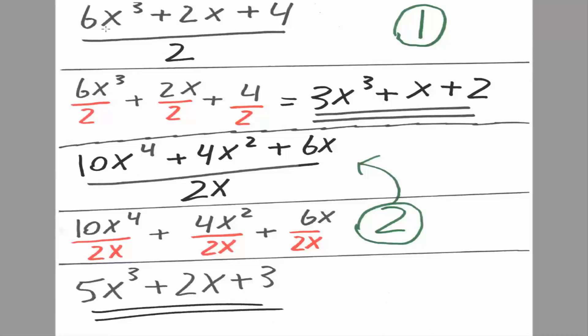So we have 6x cubed plus 2x plus 4 divided by 2. And so what we need to do is divide each component, 6x cubed, 2x, and 4, by 2.